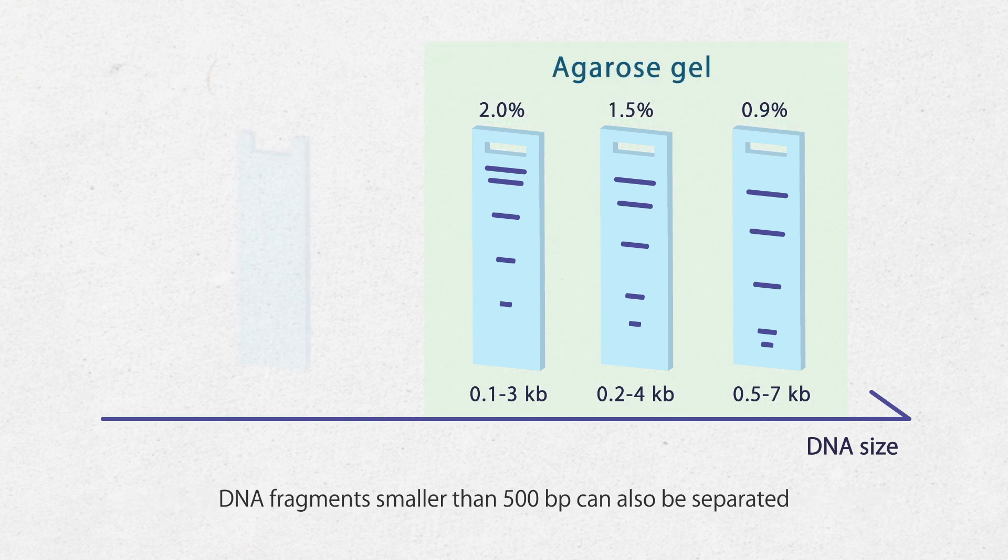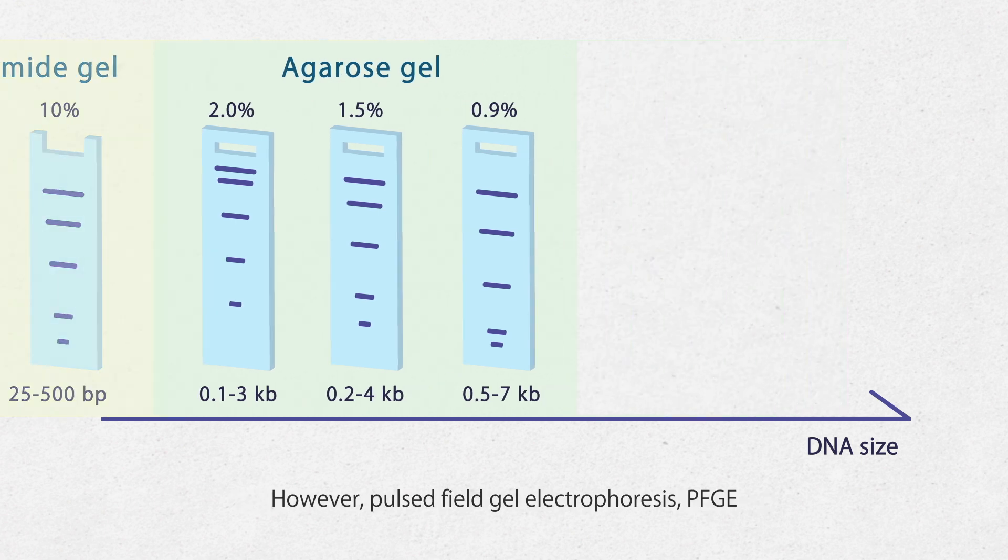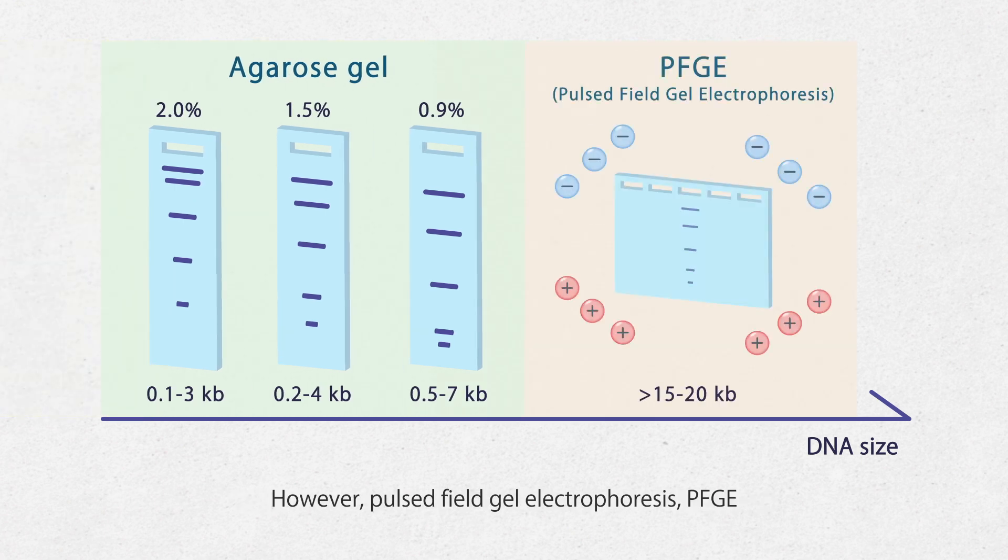DNA fragments smaller than 500 base pairs can also be separated using polyacrylamide gels which contain smaller pores. However, pulsed field gel electrophoresis (PFGE) is used to achieve better results for fragments larger than 15 to 20,000 base pairs.